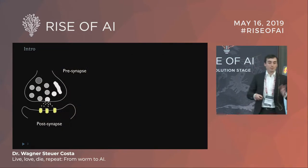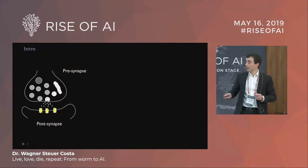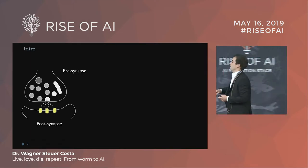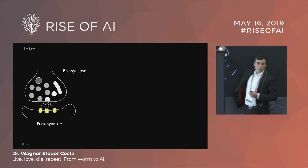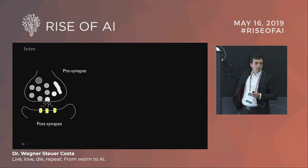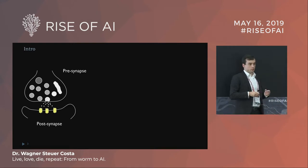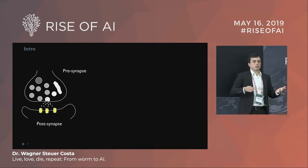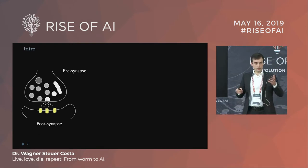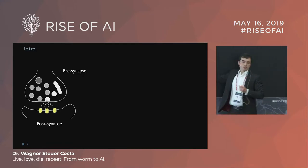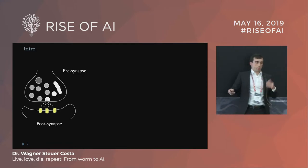Some background on myself: I work with chemical synapses. Chemical synapses use neurotransmitters such as acetylcholine or GABA, and there are also modulatory vesicles for dopamine, serotonin, and similar molecules. Chemical synapses are one type; there are other types of synapses as well.